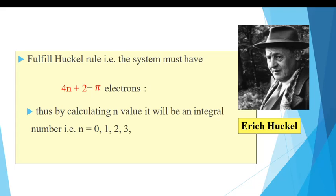Another important parameter is that the compound follows the Huckel rule. Each and every heterocyclic compound follows the Huckel rule. Whenever you have a problem related to aromaticity, you can find out whether it follows the Huckel rule or not. If it follows the Huckel rule, the compound is aromatic; if it does not follow the Huckel rule, it is non-aromatic. The formula for the Huckel rule is 4n + 2 = number of pi electrons. By solving this equation, whenever you get n equal to 0, 1, 2, 3 — integral numbers — the compound is aromatic. If n is not an integral number, then it is a non-aromatic compound.